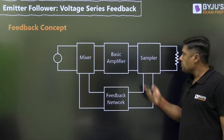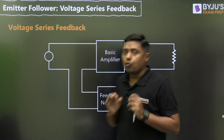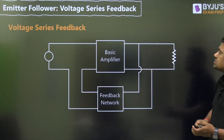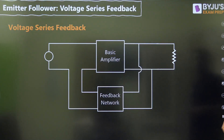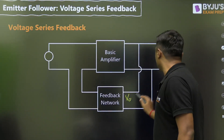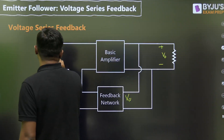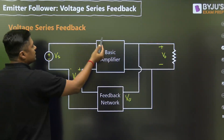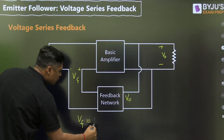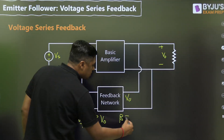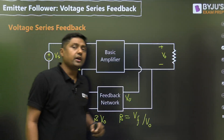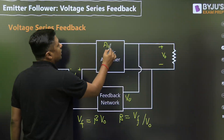If at the output we are sampling the voltage and at the input we have a series connection, we are mixing the voltage. So we are sampling the voltage and mixing the voltage — this feedback signal VF equals V0, and beta equals VF divided by V0, making it a unitless quantity. The basic amplifier is a voltage amplifier with gain AV.